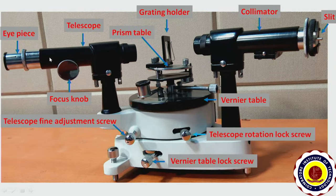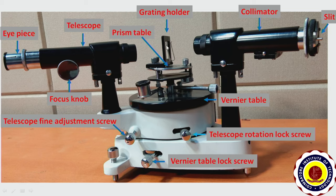These are the parts of the spectrometer. This is the telescope, which consists of an eyepiece, and the telescope can be focused with the help of a focus knob. This one is the collimator, which consists of a slit. The slit width can be adjusted with this knob, and this one is the prism table over which the grating holder is mounted.